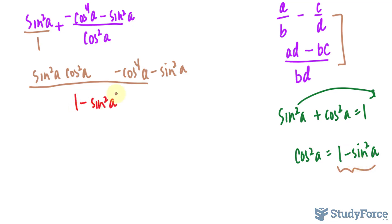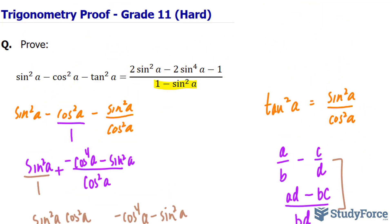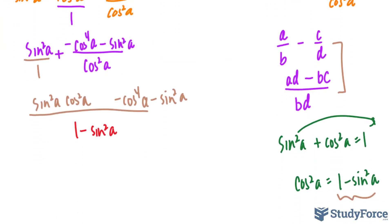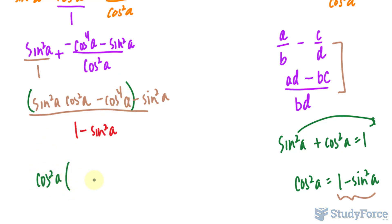I'll be replacing the denominator with 1 minus sine squared A. Moving forward, we still have a lot of work to do because the top part still doesn't match the top part of the right side — we have a lot of cosines. What I will do is common-factor cosine squared A from these two terms, giving cosine squared A times the bracket sine squared A. This cosine squared A is factored out, and in this term I end up with minus cosine squared A.